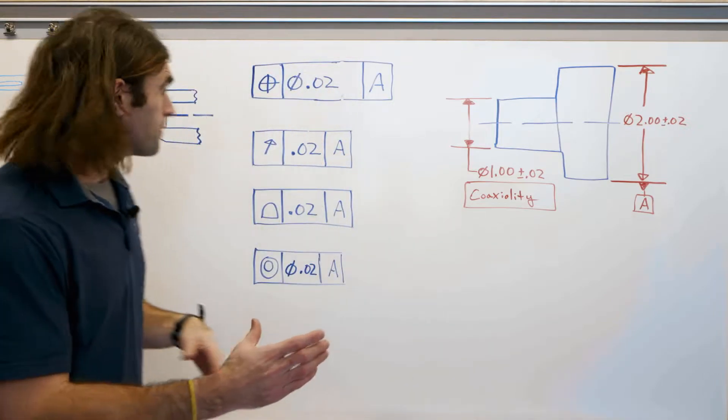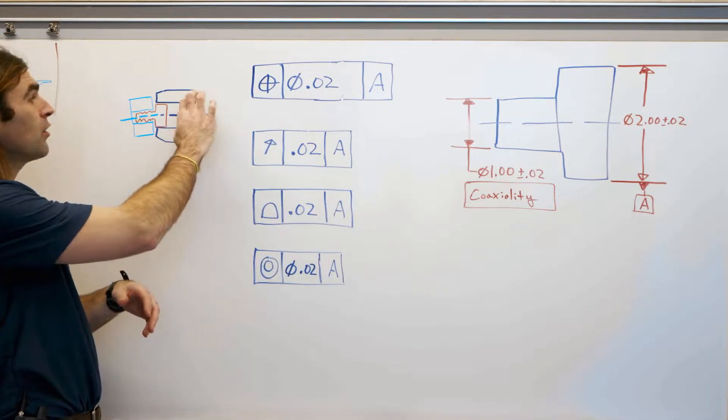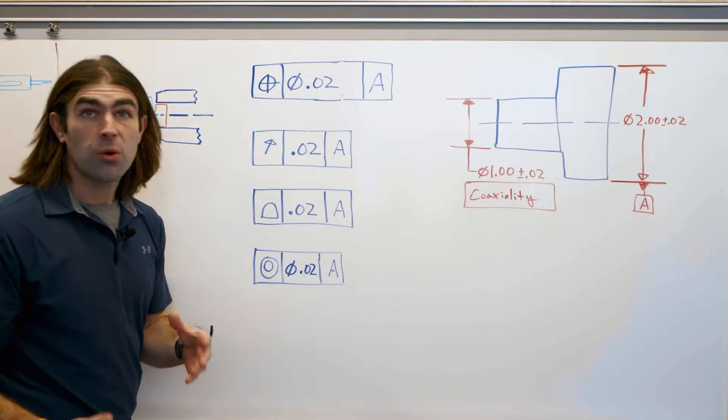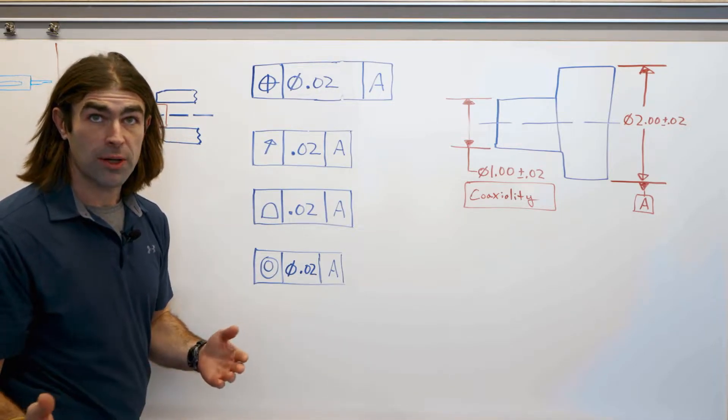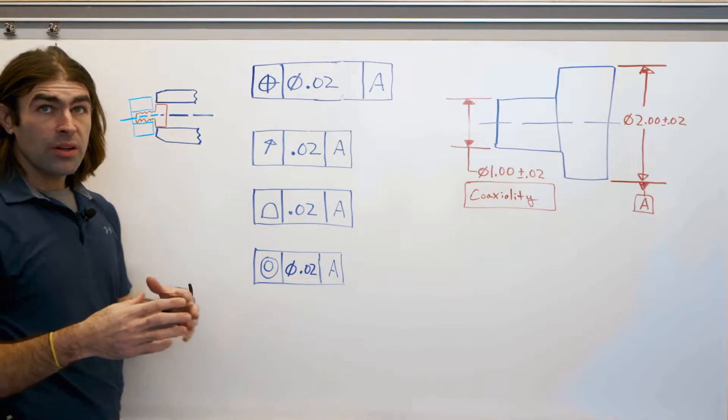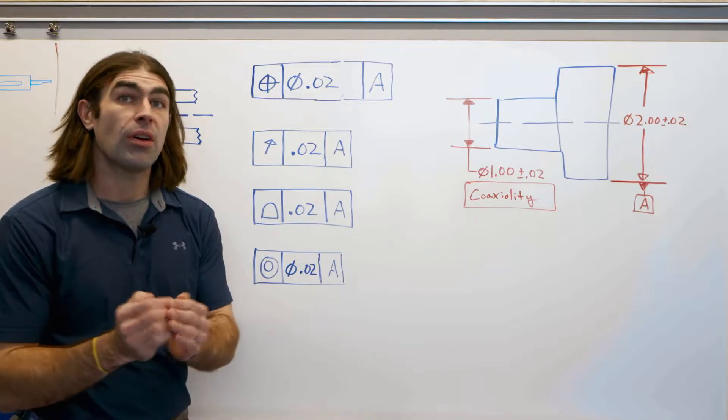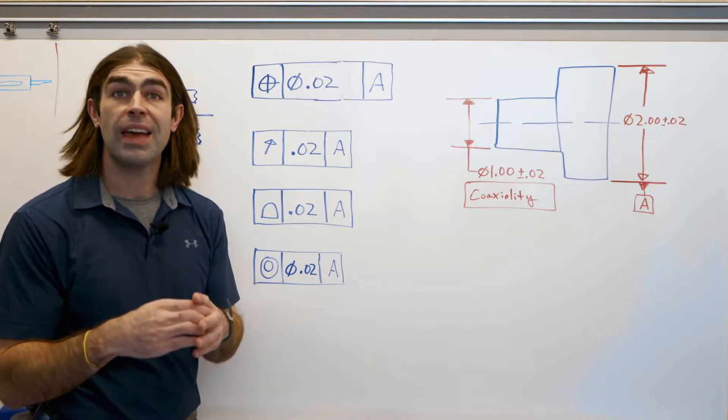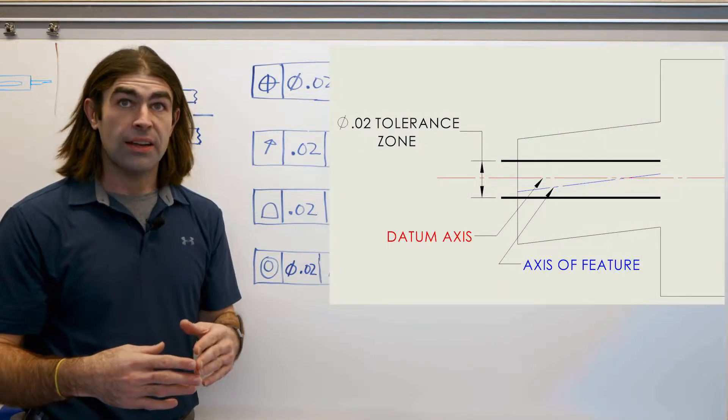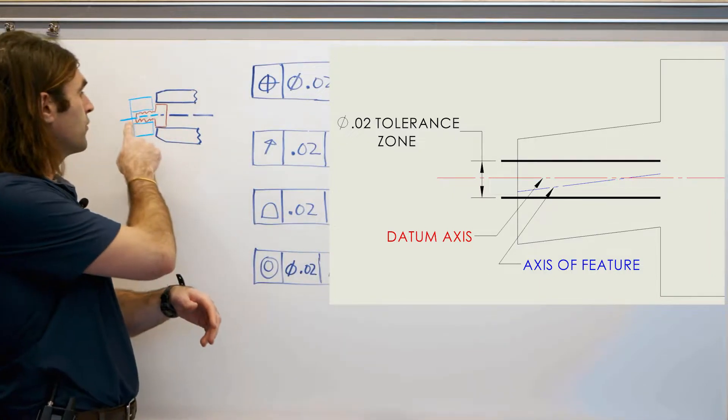So what that looks like, say you grab the part with a chuck—you've established datum A is the axis of that chuck or inspection equipment however you do it. Now the other diameter, you want to grab it with like a ring gauge, something that collapses onto the diameter and contacts the high spots.